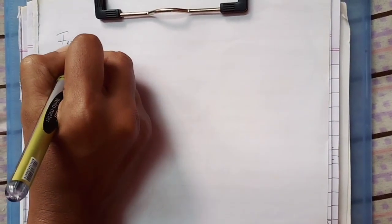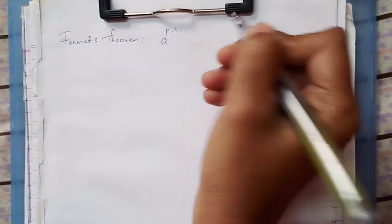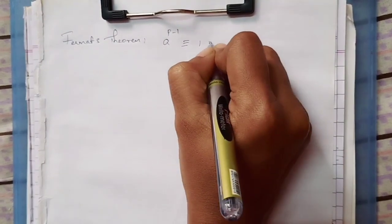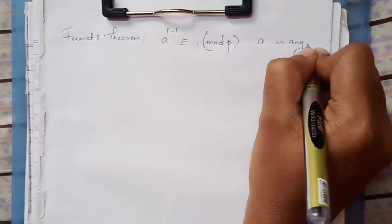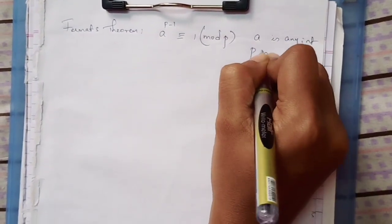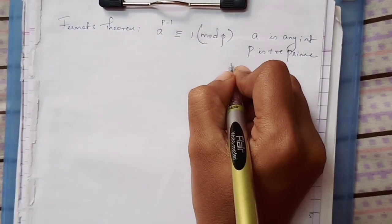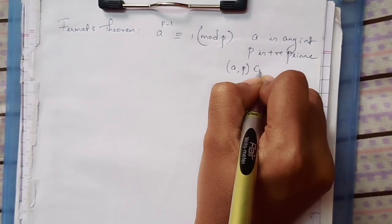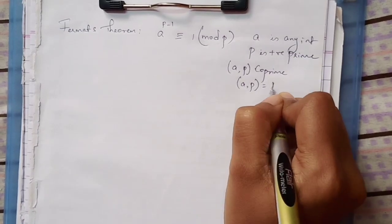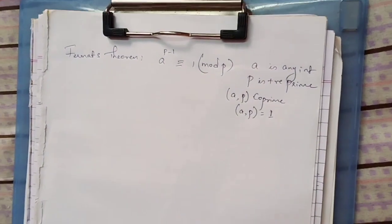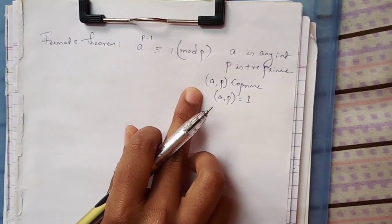Fermat's theorem states that a to the power (p minus 1) is congruent to 1 mod p, where a is any integer and p is a positive prime. Another condition is that a and p should be coprimes, meaning they have a common factor of only 1. There is no common factor between them. You have to know about this Fermat's theorem to find a remainder.